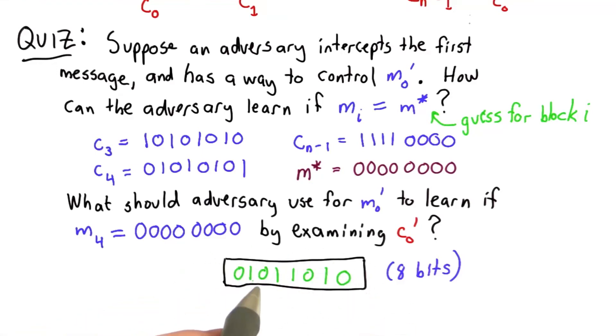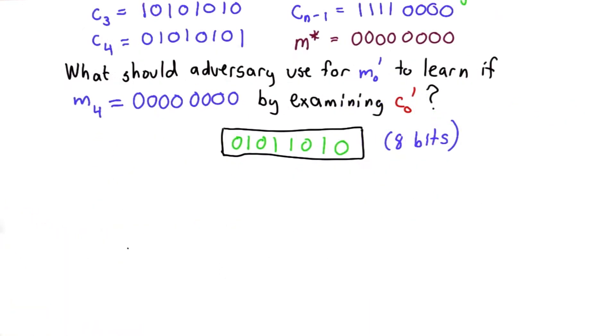The answer is 01011010. Let me explain why. Remember that we're using CBC mode encryption.